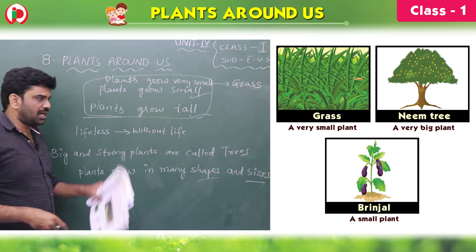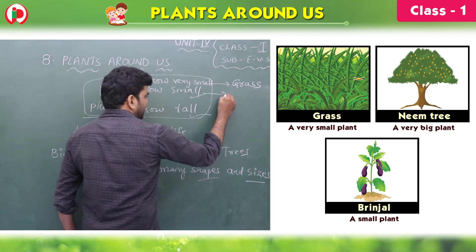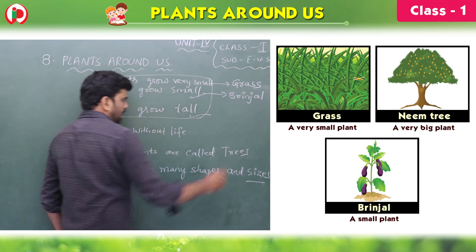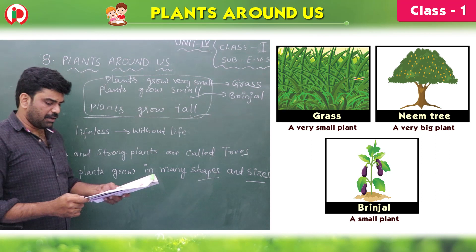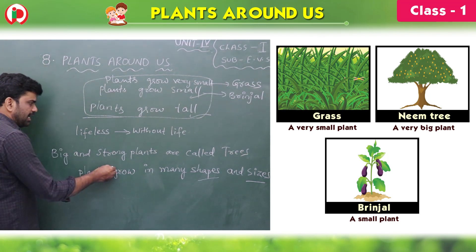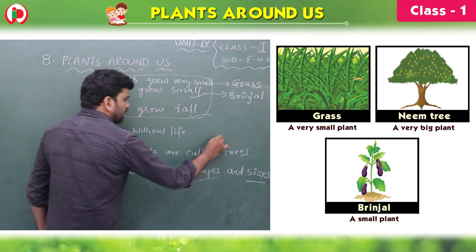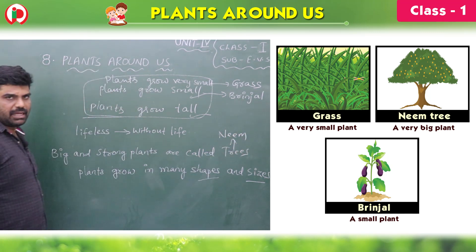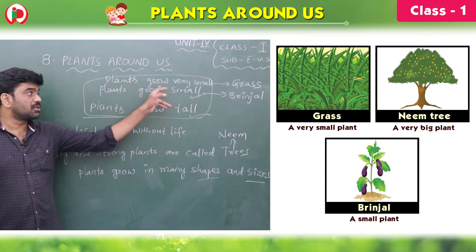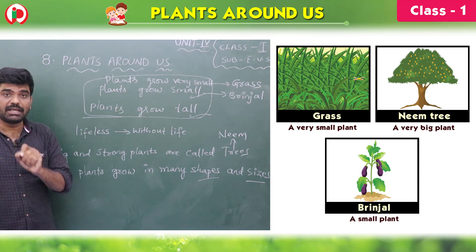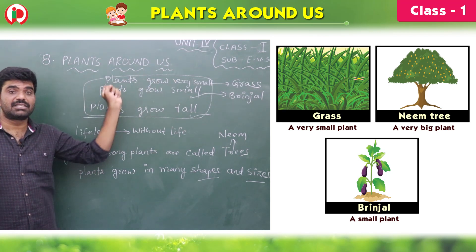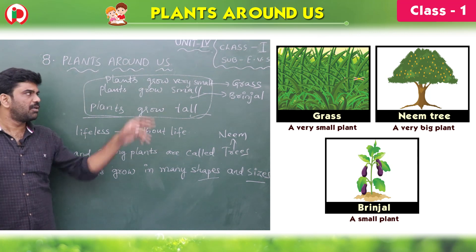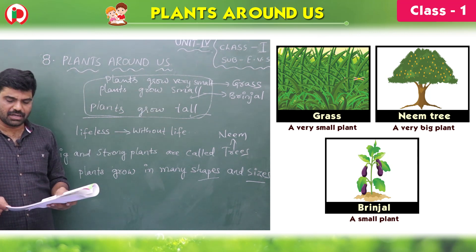Brinjal is a small plant. Brinjal is an example for a small plant. And next, a very big plant is neem tree, mango tree — all these are trees only. So grass is an example for a very small plant, and brinjal is an example for a small plant.